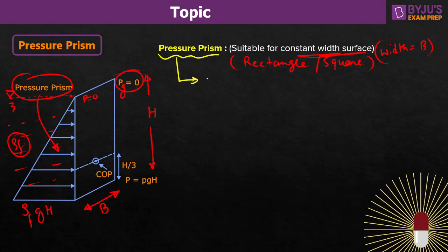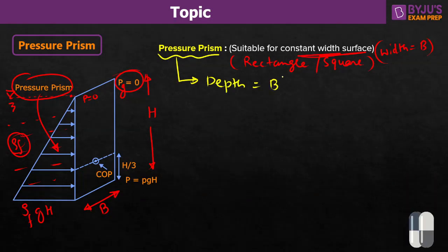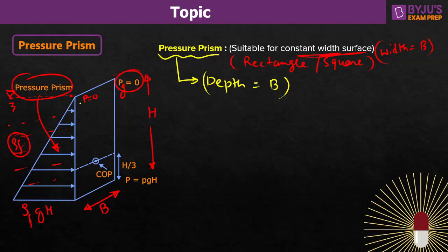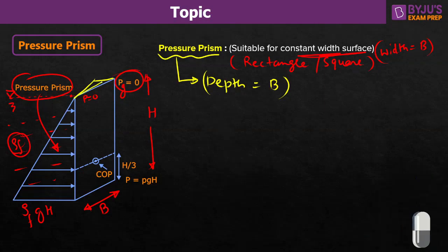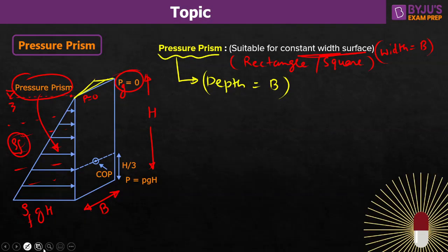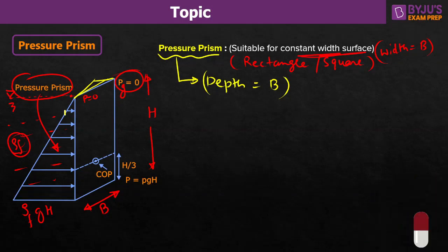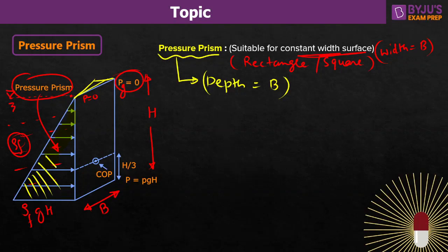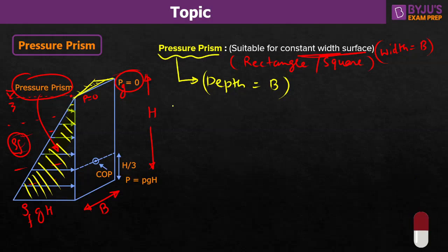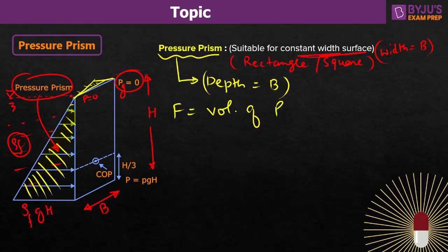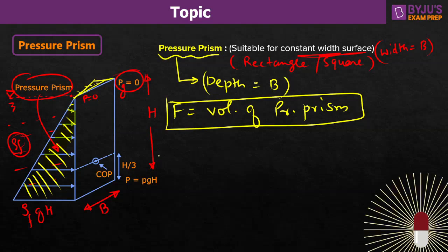The depth of the pressure prism is equal to the width of the surface — that is, the width B is the depth of the pressure prism. This is how the pressure prism looks: it is a three-dimensional figure, and the volume of the pressure prism will equal the hydrostatic force acting on the plane surface.